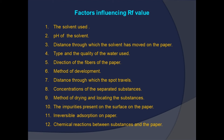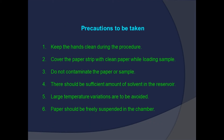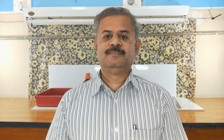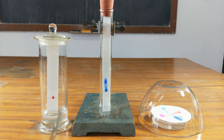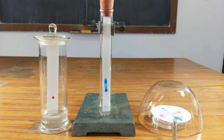We must take some precautions: keep the hands clean during the procedure, cover the paper strip with clean paper while loading the sample, do not contaminate the paper or sample, ensure there is sufficient solvent in the reservoir, avoid large temperature variations, and make sure the paper is freely suspended in the chamber. For ascending and circular paper chromatography — ascending is done in a specimen jar or boiling test tube, and circular chromatography is kept on a Petri dish and covered with a glass bowl to avoid evaporation of solvent.